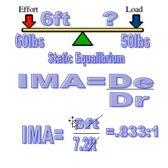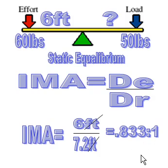This is the ideal mechanical advantage. When we talk about IMA, we're not taking into account any kind of friction loss. We'll get to that when we calculate AMA — actual mechanical advantage — which will be in our next video. Good luck figuring this out, and do some practice exercises. I'll have a page on the website with practice problems.